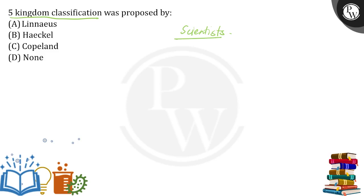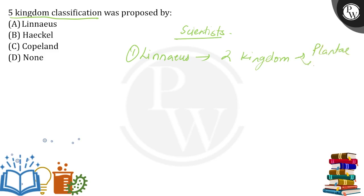First, let's talk about Carolus Linnaeus. Linnaeus proposed that only two kingdoms are enough, and he named them as two kingdom classification: Plantae and Animalia. Then came Ernst Haeckel.